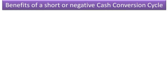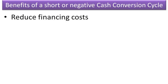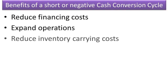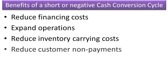A short or negative cash conversion cycle can reduce financing costs because less cash will be stuck in inventory and receivables. It allows a company to expand more aggressively because it will have freed up more cash that it can use. It also reduces inventory carrying costs because the company will be able to store less inventory — think of the just-in-time inventory systems. Additionally, it reduces the risk of customer non-payments because more customers will pay before their accounts become uncollectable.